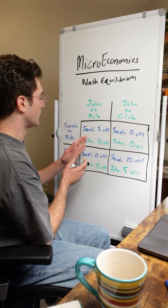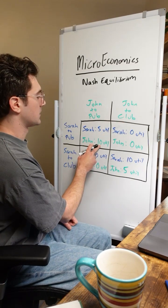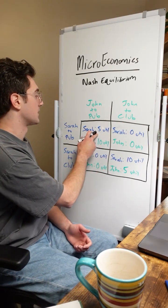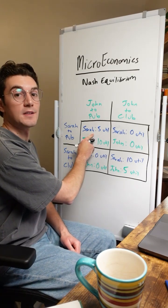Now zone in on the green values here. If John switches his strategy and goes to the club, he's going to go from 10 utility to 0. So he too is not going to ditch Sarah and is going to stay in this outcome. This means that this cell is a Nash equilibrium.